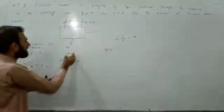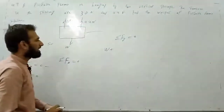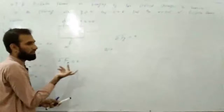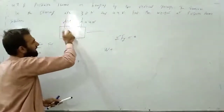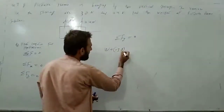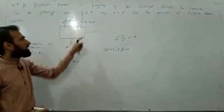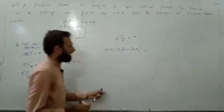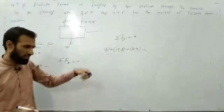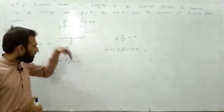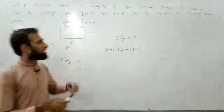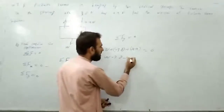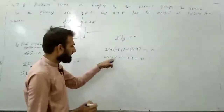W is the downward force, so we take it negative. Adding all forces: minus 3.8 plus 4.4, and W is downward — against gravity — so we take upward forces as negative and downward as positive. The equation becomes: W minus 3.8 plus minus 4.4 is equal to zero. W plus minus minus becomes plus, so 3.8 plus 4.4.